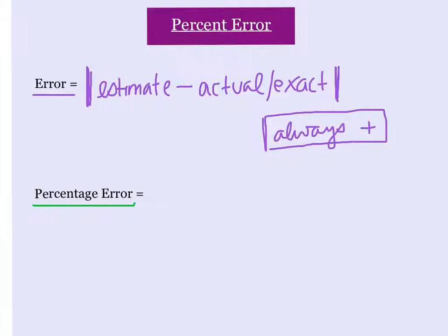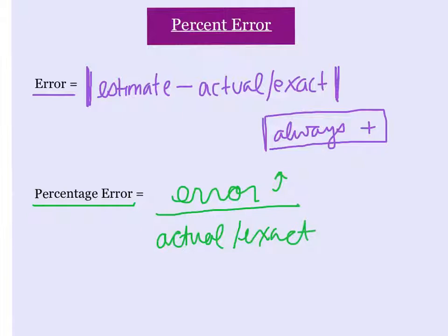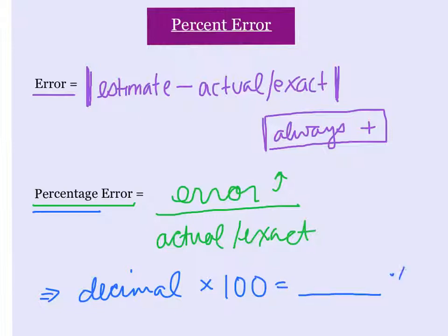Now for percentage error. We take the error we found from above—remember, it's always positive—and we divide it by the actual amount or the exact amount from the story problem. This will get you a decimal. However, because we want percentage, we take the decimal we get out, multiply it by 100, and end up with some percentage error. And that's how we find it.